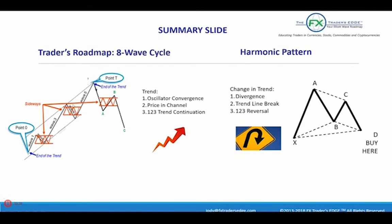Let's recap. We started by looking at the eight-wave market cycle: one, two, three, four, five, and the trend. We have a trend line break and the ABC correction. Then we discussed the trend three-step process: look for oscillator convergence, price in the channel, and 1-2-3 trend continuations. Then we looked at the change in trend — at point T we have divergence, a trend line break, and a 1-2-3 reversal. And finally we're looking at targets: this eight-wave pattern is actually a harmonic pattern, so we figure out what the harmonic pattern is, plot it, and come up with our target for the eight-wave market cycle. This ties together Elliott, Fibonacci, and harmonics in one simple picture.